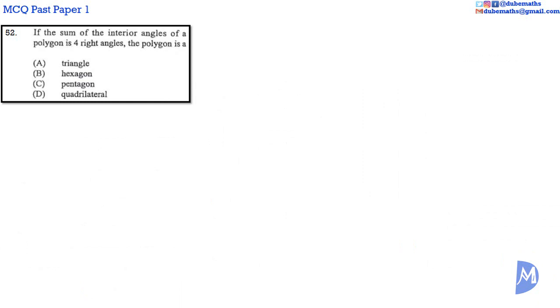Question 52. Four right angles is the sum of the interior angles in a quadrilateral. The answer is D.